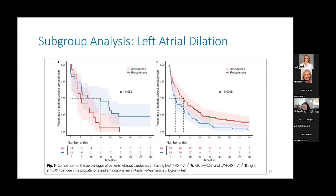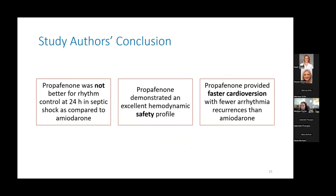In a predefined subgroup, the authors performed serial echos from randomization through 24 hours after antiarrhythmic administration. In patients with left atrial dilation — defined as end-systolic volume in the left atria greater than or equal to 40 mL/m² — there was a trend toward amiodarone having greater effect in terms of cardioversion compared to propafenone. On the left-hand graph, propafenone is the blue line and amiodarone is the red line, showing the percentage of patients without cardioversion — more patients remained without cardioversion following propafenone. The authors concluded that propafenone was not better for rhythm control at 24 hours in septic shock compared to amiodarone, but that propafenone demonstrated an excellent hemodynamic safety profile and provided faster cardioversion with fewer arrhythmia recurrences.